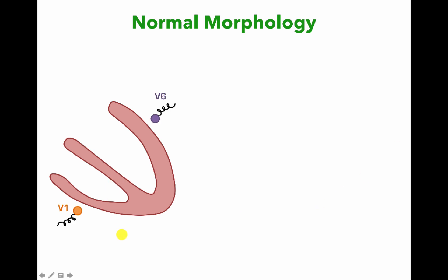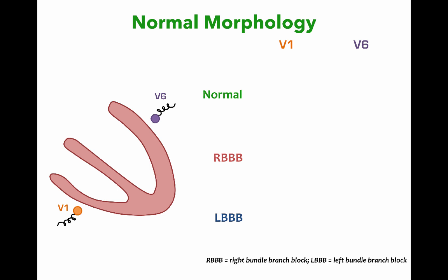We're going to lay out a little schema here so we can compare everything all together. We'll consider normal morphology, an EKG with right bundle branch block, and an EKG with left bundle branch block, looking at what it looks like in V1 and V6. We're going to exaggerate the different components of the electrocardiogram so we can see in detail how the EKG develops in these three different scenarios.